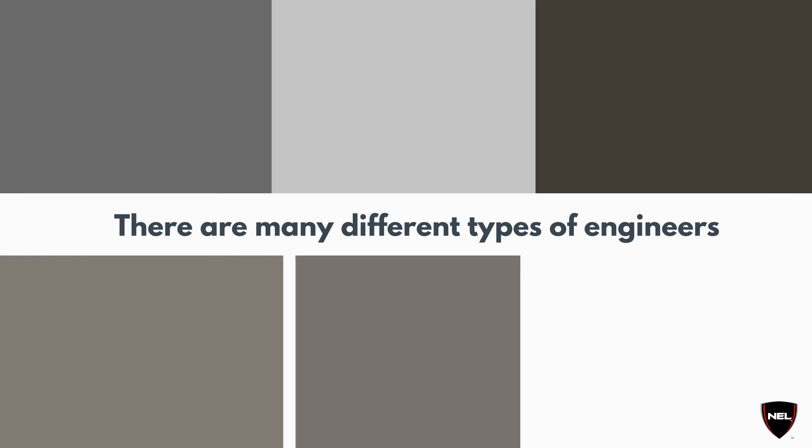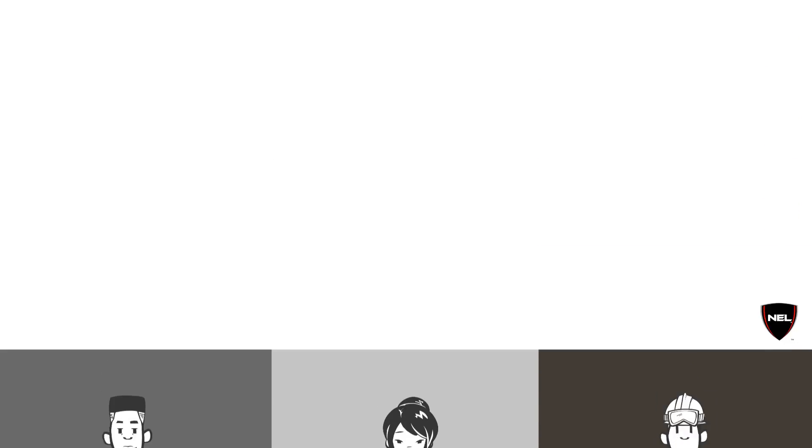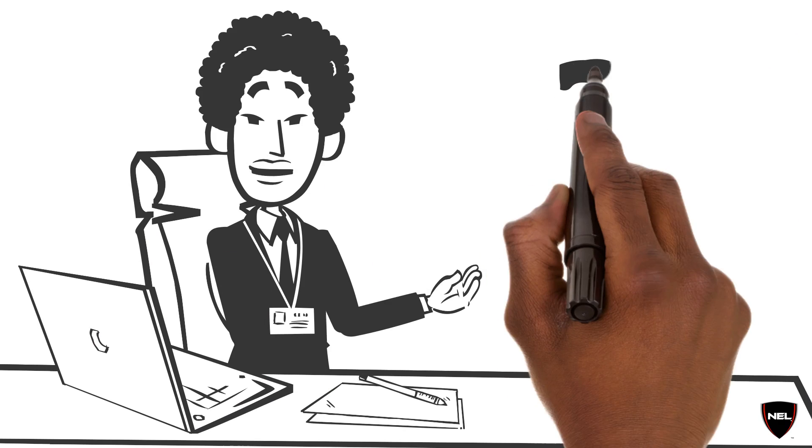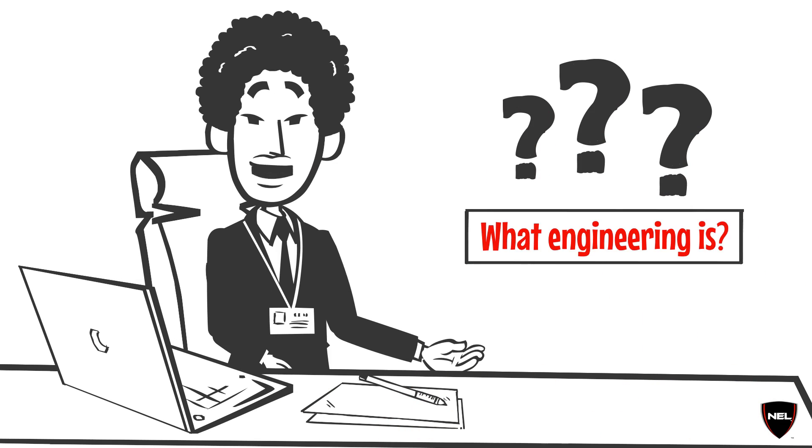There are many different types of engineers, and the products that they engineer vary in many ways. But before we can continue discussing the different types or disciplines as they are called, we need to first define what engineering is.